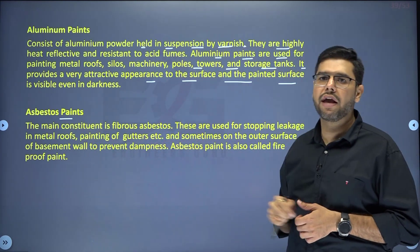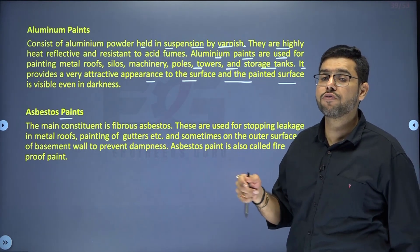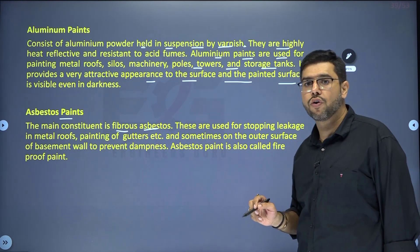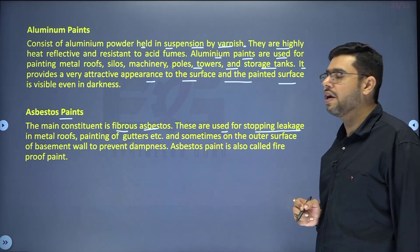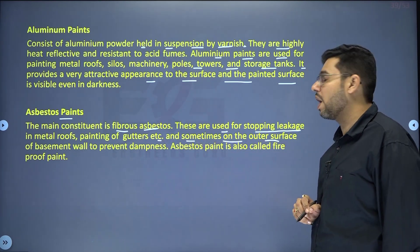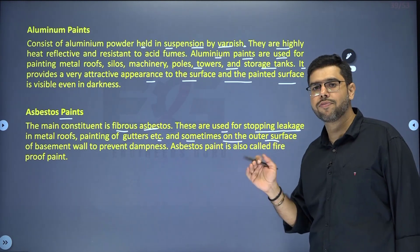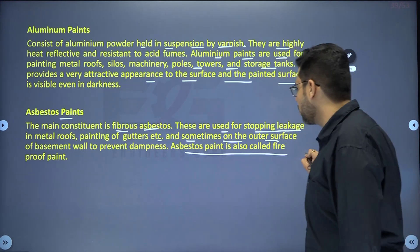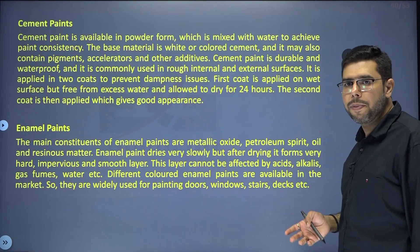Asbestos paint is actually the fireproof paint. The main constituent is fibrous asbestos. It is used for stopping leakage in metal roofs, painting of gutters, and sometimes on the outer surface of basement walls to prevent dampness. Asbestos paint is what we call fireproof paint.